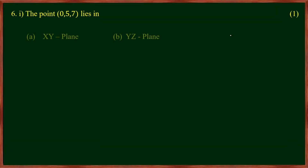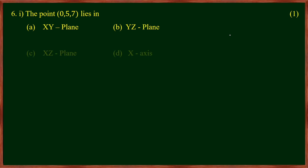The point (0, 5, 7) lies in which plane? What is the point of 0? We are using the coordinates x, y, z. Here x is 0 and y is 0, so the point lies in the yz-plane.